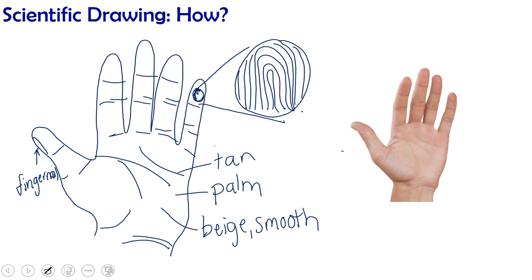And then lastly, if you are able to observe something in real life, you can include a scale, something that tells us how big it is, right? I can't do this with this one since I'm not actually seeing this hand in real life, but you can do it with the specimens that you observe. So that's how we do scientific drawing. That's what you're going to practice in your labs.